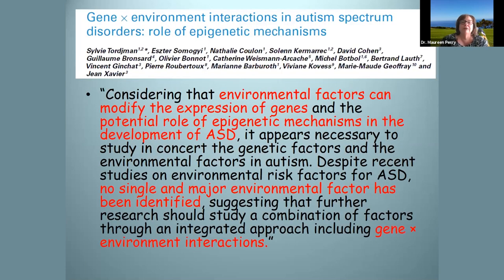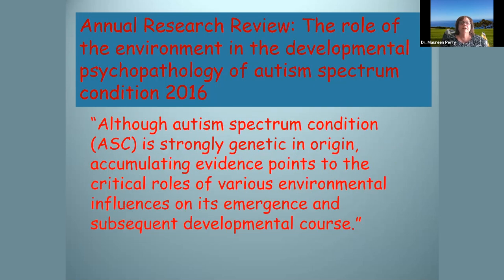A 2014 paper on genes, environment, and epigenetics in ASD stated there's no single major environmental factor identified — but we know it's genes times environment. That's what's going on. A 2016 paper confirmed it's strongly genetic in origin — we talked about the twin studies — but we're looking at what environmental influences affect the emergence and developmental course of ASD. Why do some people with the genetic predisposition develop autism and some don't?